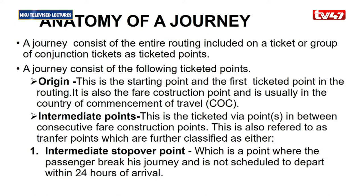A journey consists of the following ticketed points. In air transportation there have to be ticketed points. Origin is the very first ticketed point — as you embark on a journey, there is a point you move from initially. Origin is the initial starting point and the first ticketed point in the routing. It is also the fare construction point and is usually in the country of commencement of travel. For example, if you're moving from Kenya to London, Kenya becomes your origin — the COC, country of commencement.